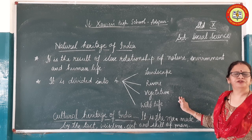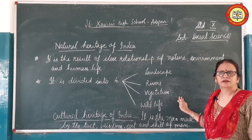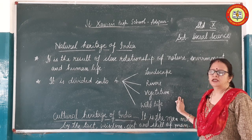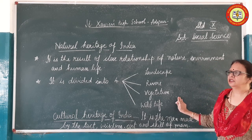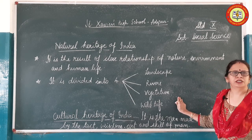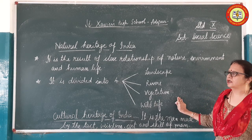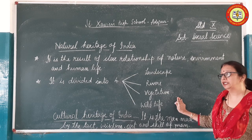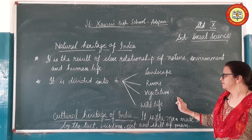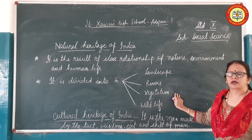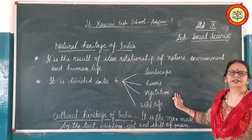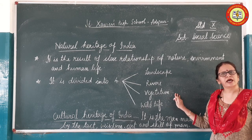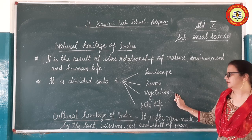Vegetation is the next category. Many trees are worshipped in Indian society, such as the banyan tree, the peepal tree, and the basil plant. Trees are also the shelter and source of food for human beings, plants, animals, and birds.